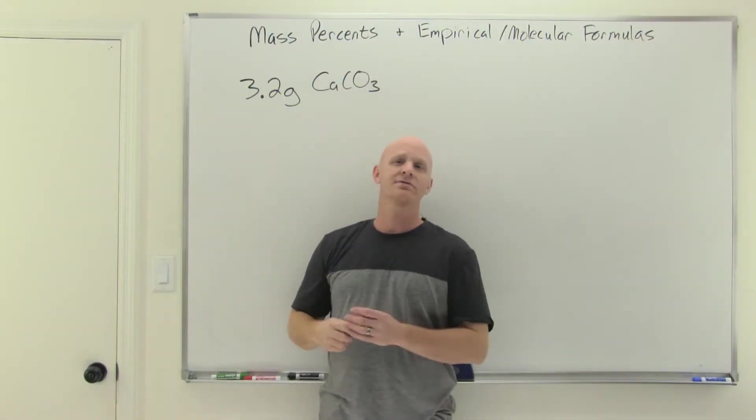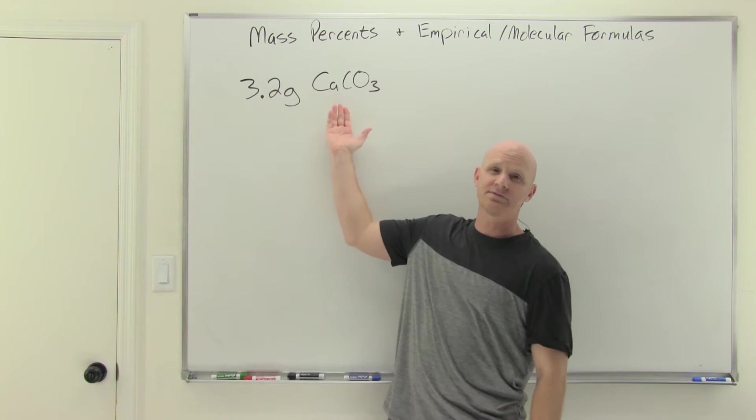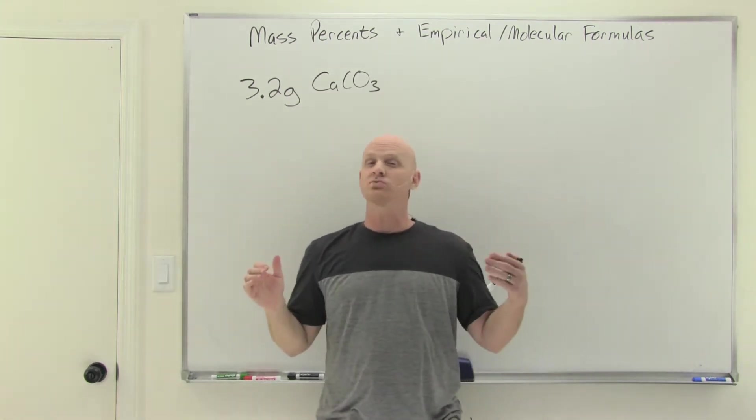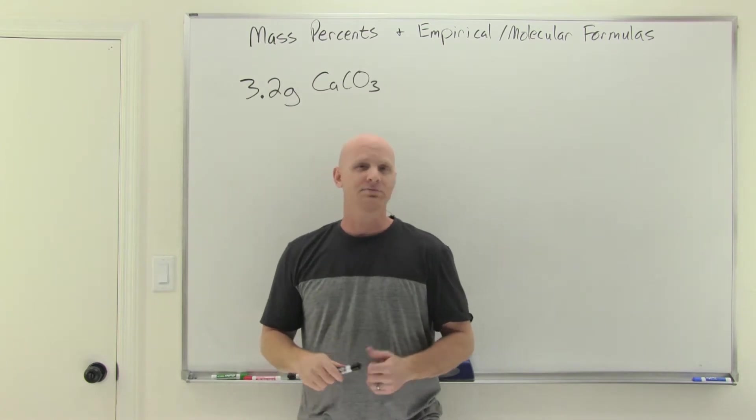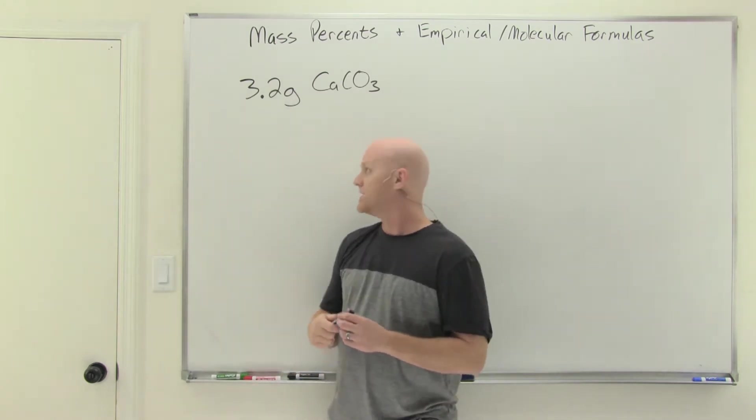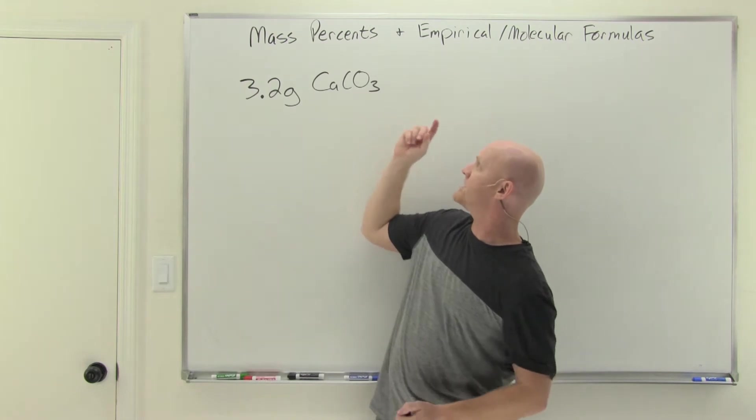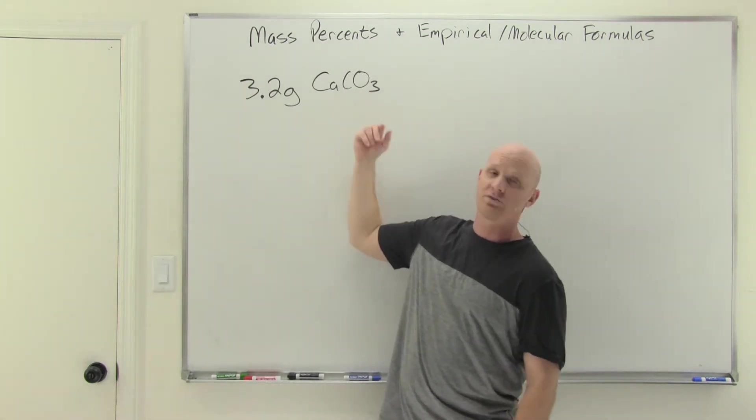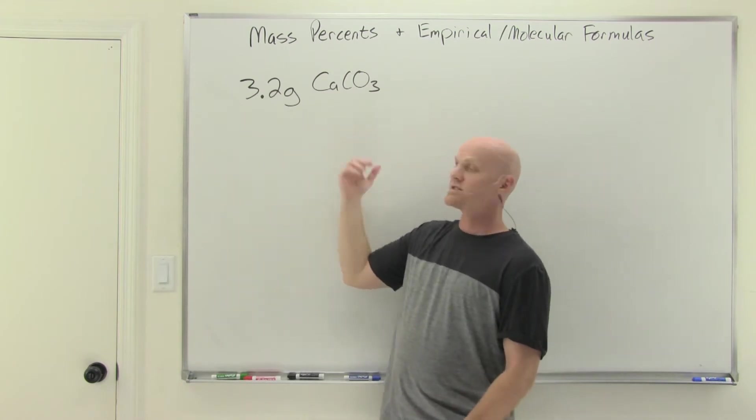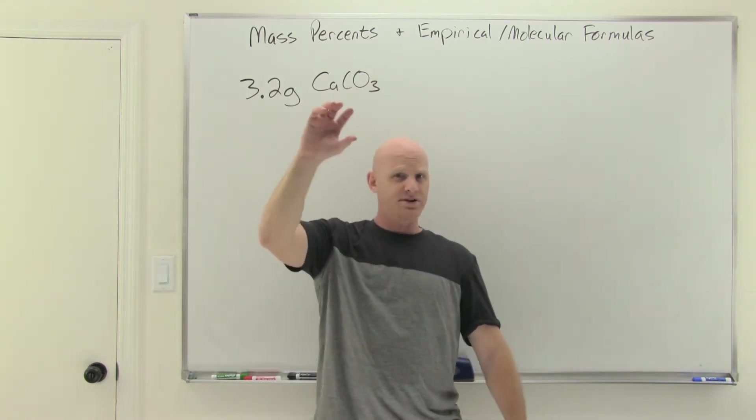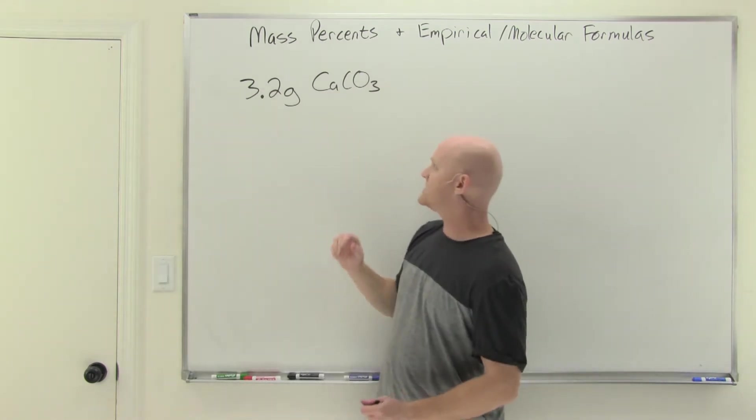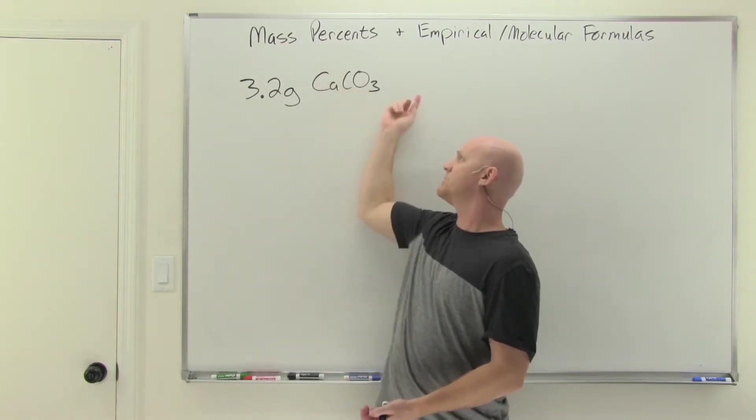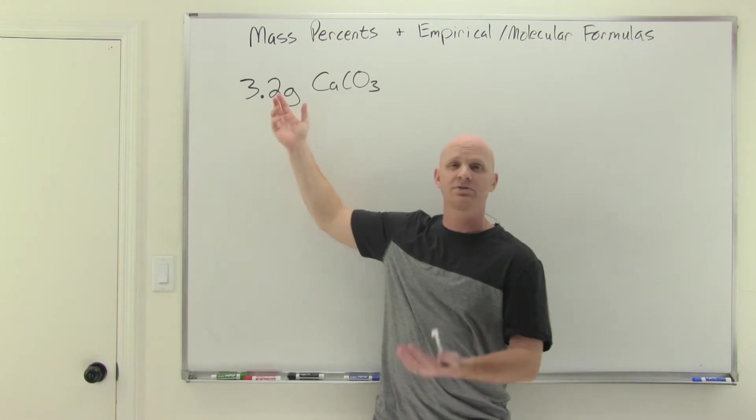We're going to start off with a 3.2 gram sample of calcium carbonate, CaCO3. I chose that on purpose because that's a super convenient sample for the calculations we're about to do. We want to find the percent carbon and the percent oxygen in this compound. To find percent anything, it's usually a part over total times 100. So if I want the percent carbon, I'd find the number of grams of carbon in the sample divided by the total weight of the sample times 100, except we're not going to do that.